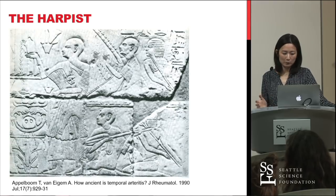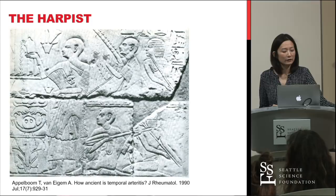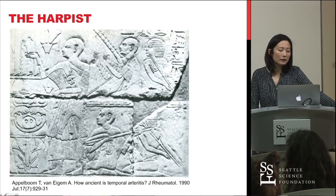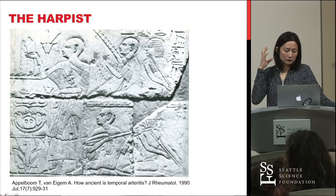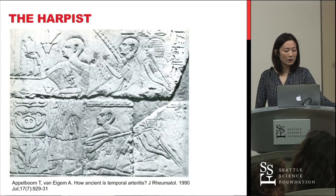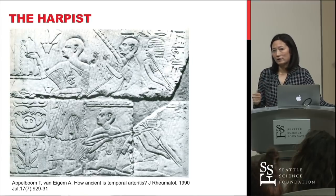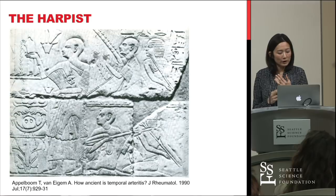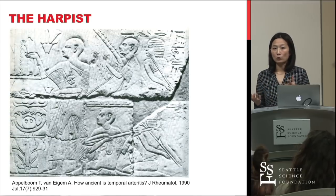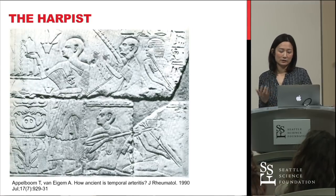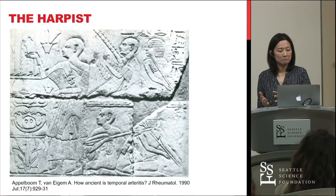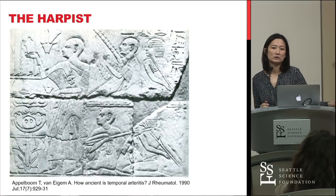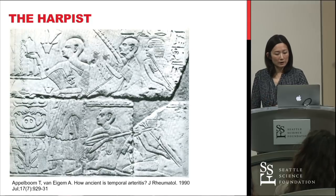This is probably the most ancient description of giant cell arteritis — a rheumatology journal found an Egyptian piece of artwork depicting a man who was cachectic-looking with an abnormal scalp appearance. Beyond that, there is little description of this disease further back than 100 years. Possible reasons include that we now have an older population, people didn't live as long historically, or there has been a new environmental trigger in the last century.